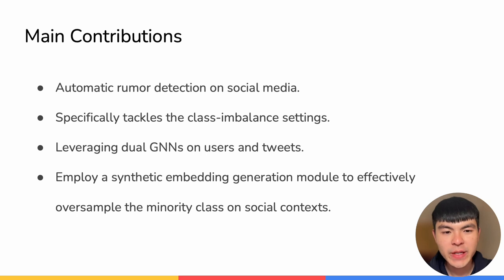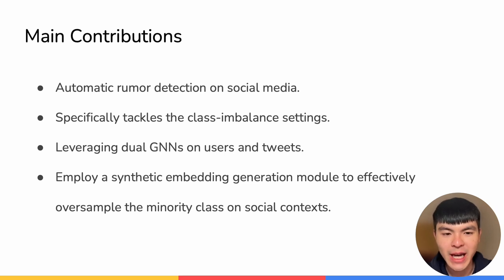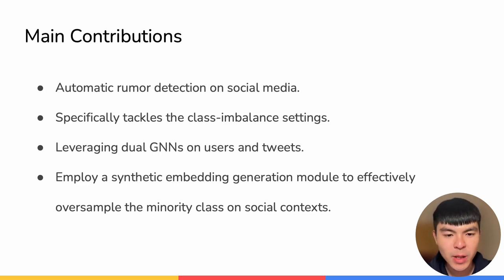Our main contributions are three-folds. First, we handle the task of automatic rumor detection on social media. Second, we specifically tackle the class imbalance settings, which is much more challenging than the conventional setup. In this work, we propose a SynthDGN framework that leveraged Dual GNN modules on users and tweets to better capture the useful signals. And the last contribution is that we employ a synthetic embedding generation module to effectively oversample the minority class. In our context, the minority class refers to the non-rumor class.